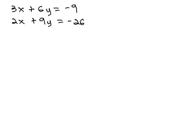If we can't multiply one equation by something to get opposites, what we will do is multiply both equations by something to get opposites.